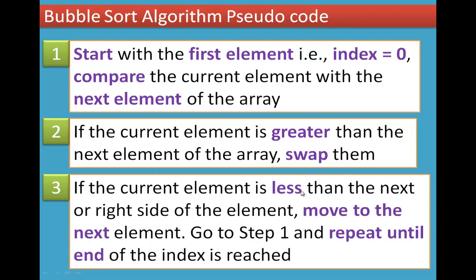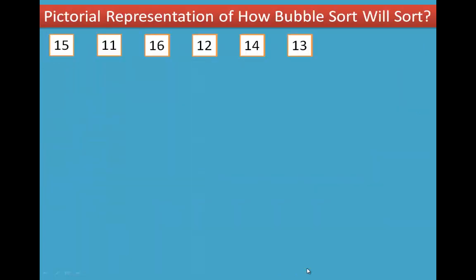If this current element is less than the next element, the next element stays on the right side — that is, the next element moves. We continue until the end of the index. Now, when we start the bubble sort, we can represent it pictorially.